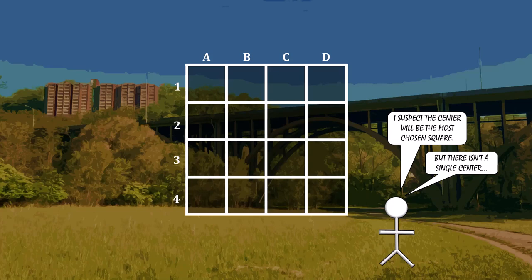B2, C2, B3, and C3 all touch the center, but themselves are not the center. This causes a bit of a coordination crisis. And what ends up happening is that people tend to choose the top left square the most instead, A1 here. But they don't choose it as often as people choose the dead center of the 5x5 square.